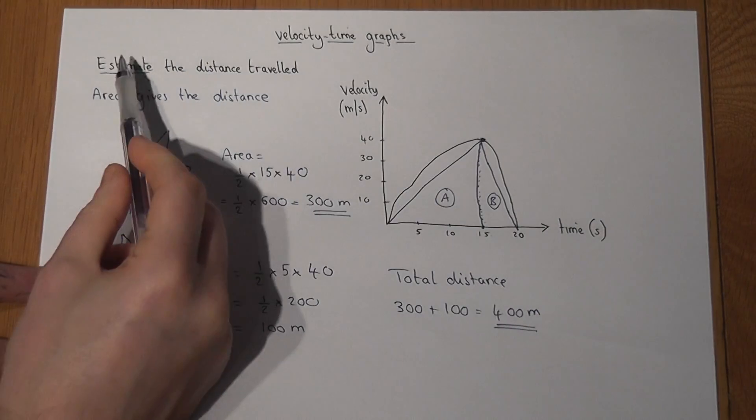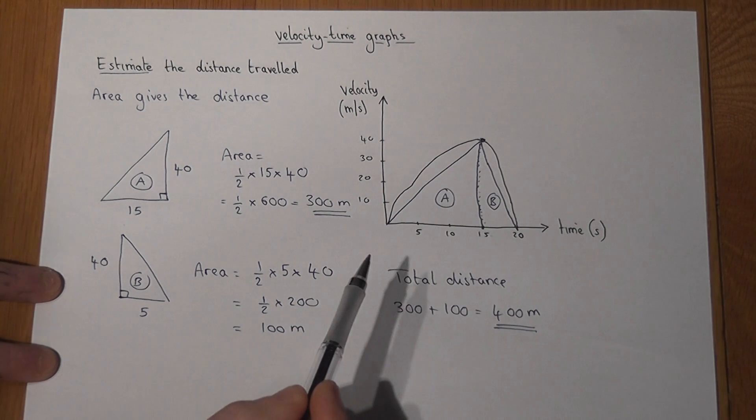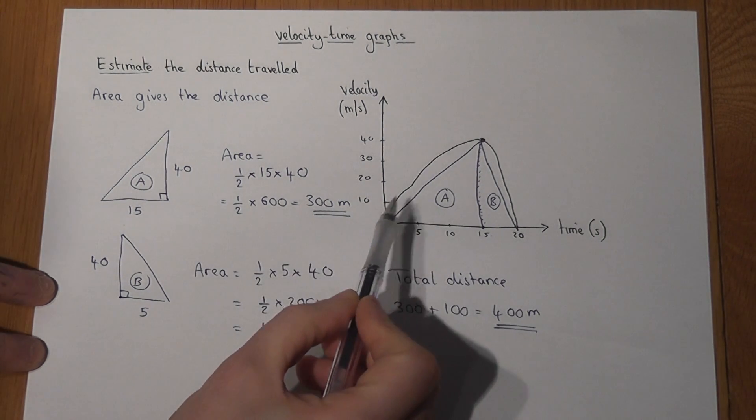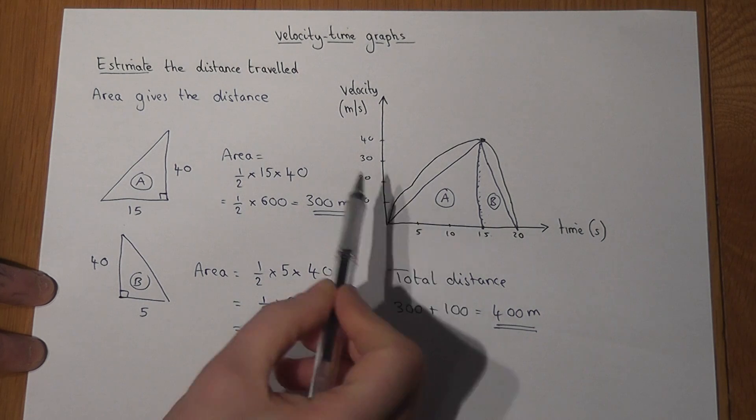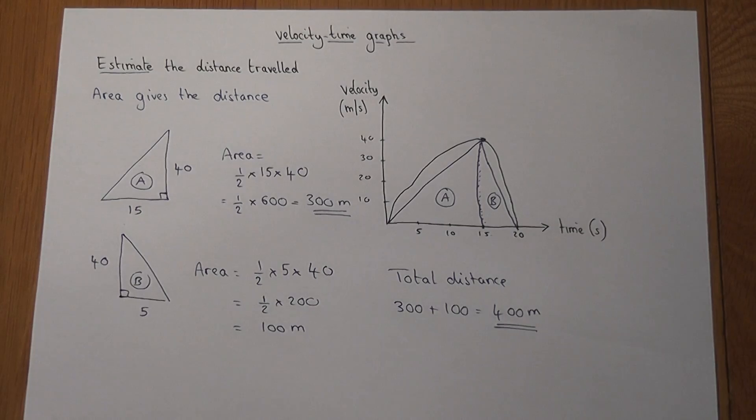Again, that's only an estimation. It'll be under the total area, but we've shown how we understand that the area under the graph gives us the distance travelled by this particular person.